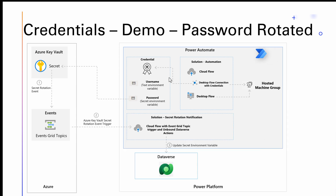When a password gets rotated, the credential change notification is emitted from Azure Key Vault into the Event Grid. When an admin changes the secret, the first event triggered is captured by the Event Grid. Because we are subscribing through the secret rotation notification cloud flow, that event triggers the cloud flow. Once triggered, the Dataverse unbound action notifies the system of that secret change — all happening automatically without any manual intervention. The desktop flow credentials don't need to be updated; it is all taken care of by the underlying service.